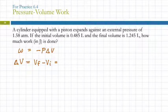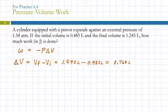So the final volume, and they were really nice and actually labeled it, the final volume is 1.245 liters. The initial volume is 0.485 liters. So we subtract 1.245 minus 0.485. My calculator is saying 0.76. It should be 0.760 liters. That's the change in volume.